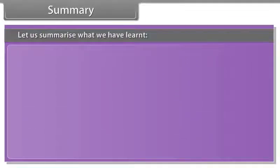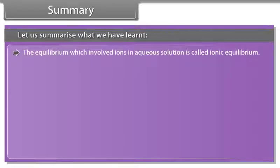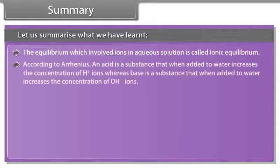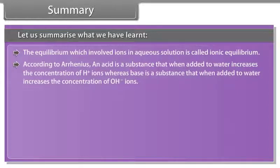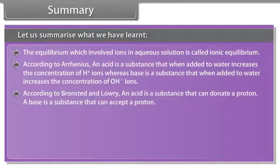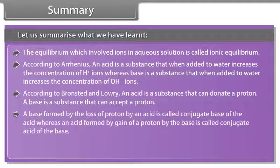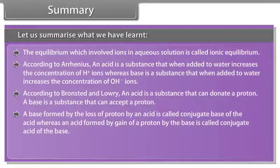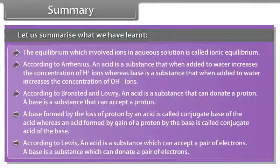Summary: The equilibrium which involves ions in a solution is called ionic equilibrium. According to Arrhenius, an acid increases the concentration of H⁺ ions in water, while a base increases the concentration of OH⁻ ions. According to Bronsted and Lowry, an acid donates a proton and a base accepts a proton. A conjugate base is formed by loss of a proton from an acid; a conjugate acid is formed by gain of a proton by a base. According to Lewis, an acid accepts a pair of electrons and a base donates a pair of electrons.